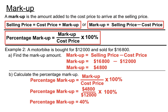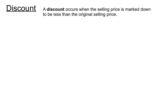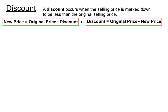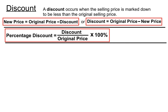The shopkeeper bought the bike for $12,000 and marked it up forty percent — $4,800 — hoping someone will buy it. Now let's look at discount, which goes the other direction. A discount occurs when the selling price is marked down to be less than the original selling price. The new price equals the original price minus the discount.